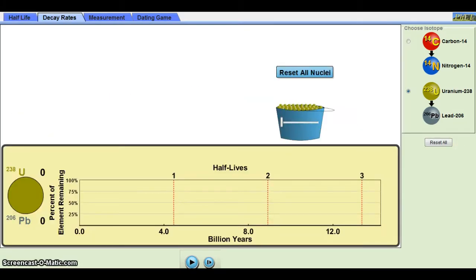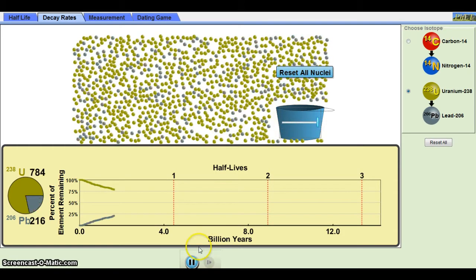In the decay rate section, students are asked to think a little bit more deeply. Their gut reaction is that at two half-lives, the original number of atoms is gone. To illustrate why this is not true, they put all the atoms on the workspace and run the simulation.